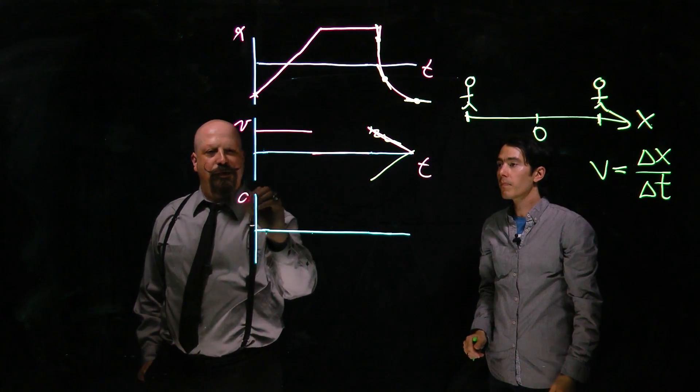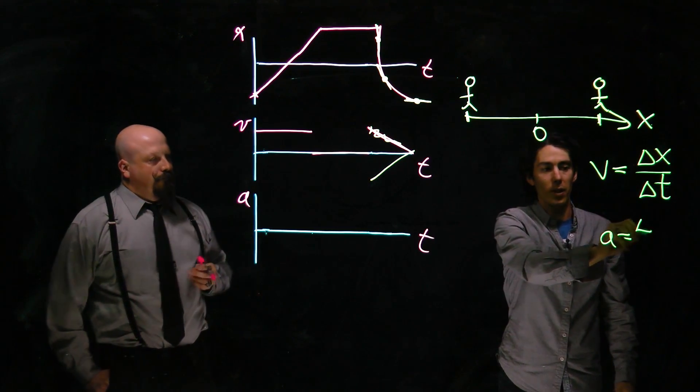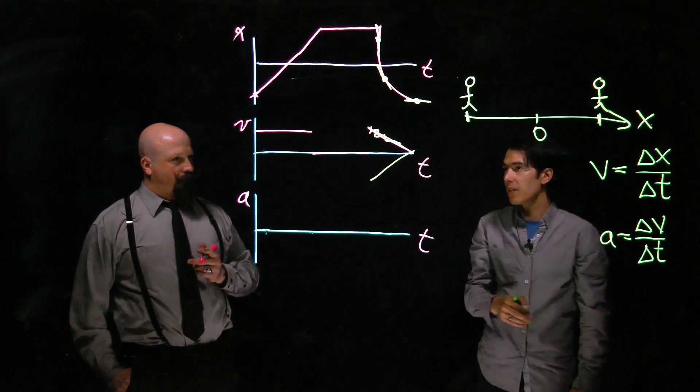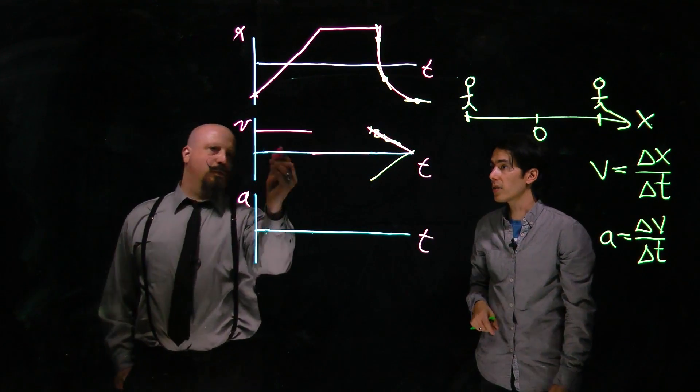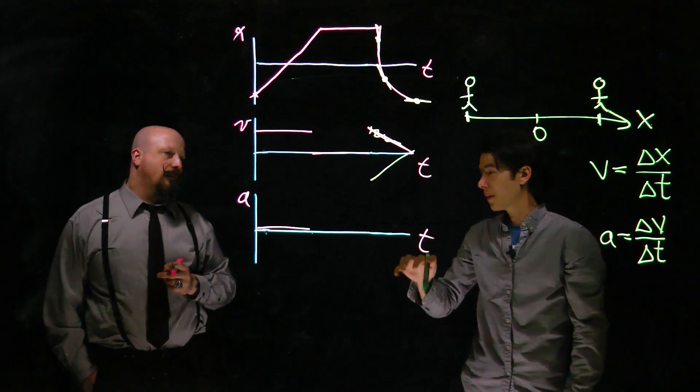All right, so then what can we say about the acceleration versus time? A is defined in a very similar way that we define v. It's the rise over the run, delta v over delta t. So the slope of this velocity time graph is going to tell us what the acceleration is. So slope here is zero, and we'd expect that. Constant speed, so it doesn't change.